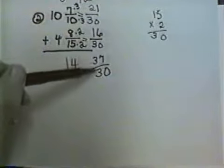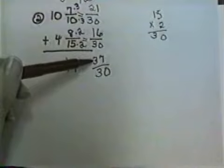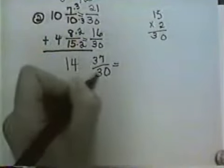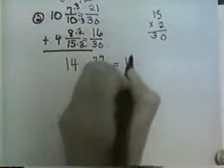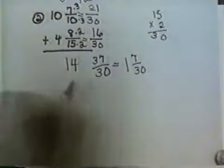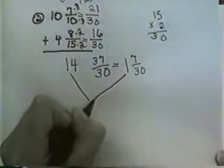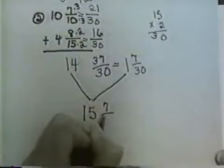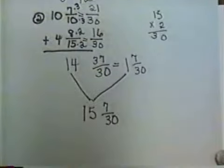So we can't leave this 37 thirtieths with a top number bigger and also have the 14 there. So what we have to do is change that 37 thirtieths to a mixed number. 30 will go into 37 one time with 7 thirtieths left over. So that whole number one needs to be put over here with this 14 to give us 15. And we end up as our answer 15 and 7 thirtieths.